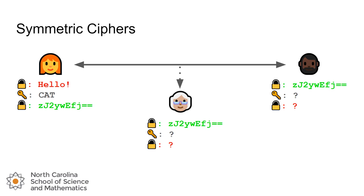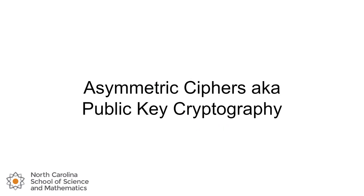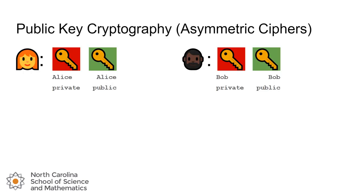So let's look at what public key cryptography can do. We're going to call public key cryptography asymmetric ciphers, because we have two different keys that are going to be used. Alice is going to have one set of keys and Bob is going to have a different set of keys, and depending on the circumstances, we'll determine which of those keys gets used.